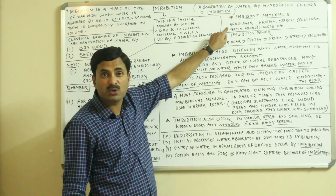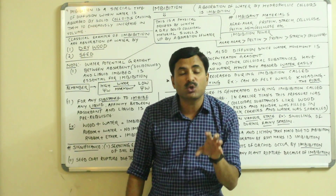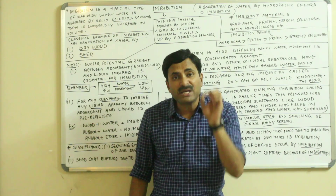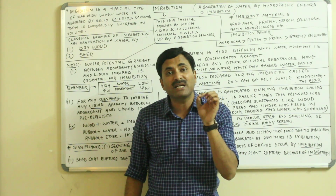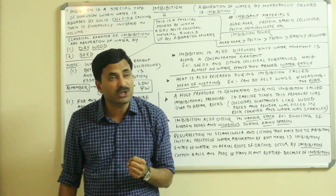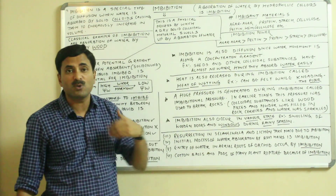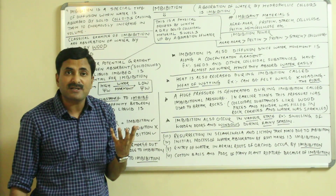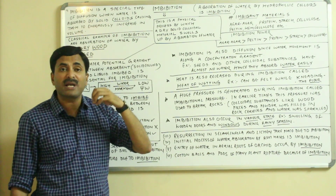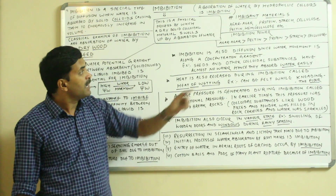One such substance is agar agar. Agar agar is isolated from two algae known as Gellidium and Gracilaria. It is the best type of colloidal substance because it absorbs water 99 times its normal weight. Other imbibent colloidal substances include protein, starch, cellulose, pectin, and hemicellulose. Among these, agar agar is widely used in biology laboratories as a culture medium.